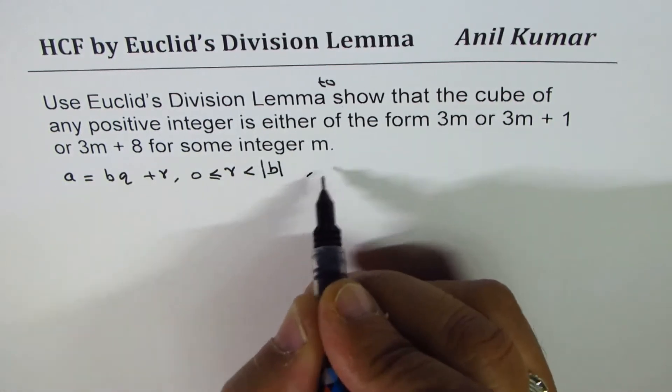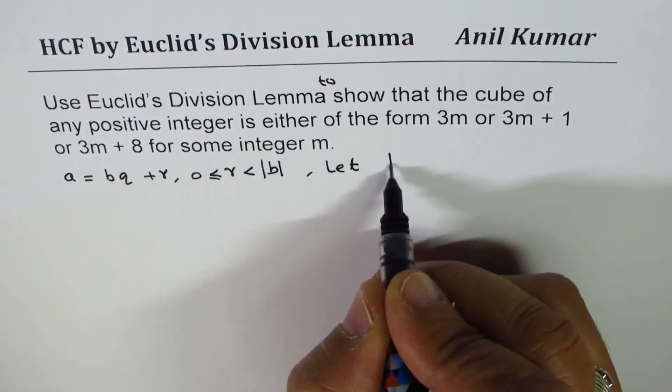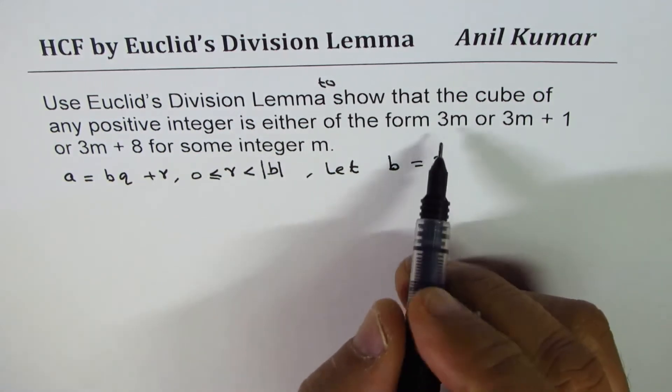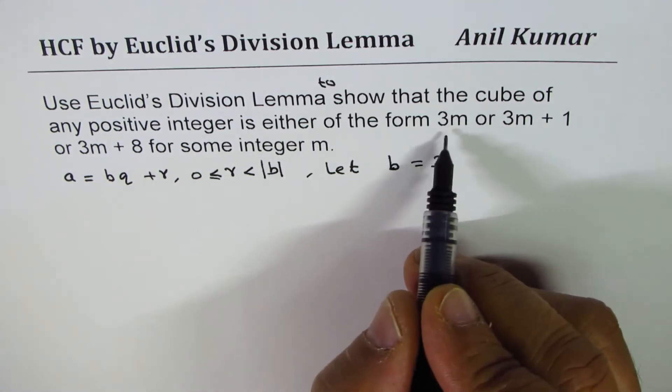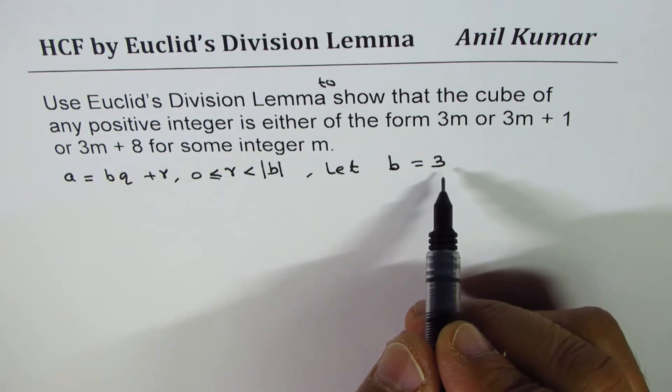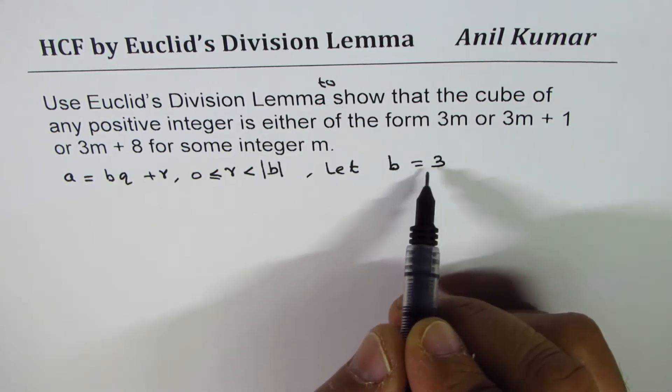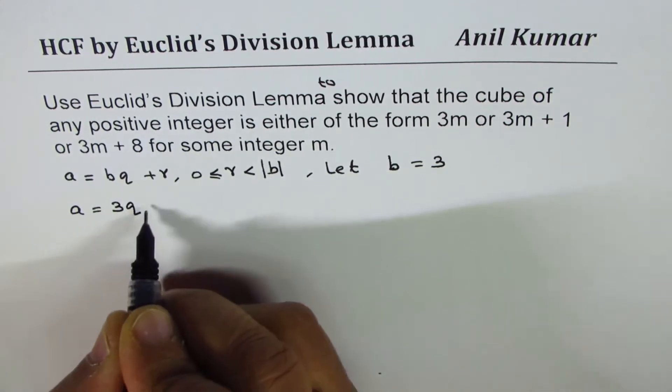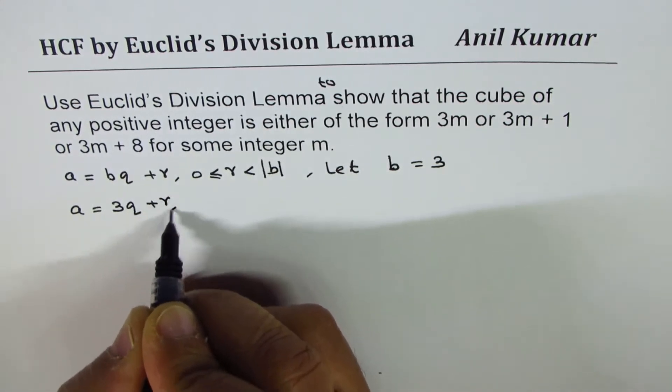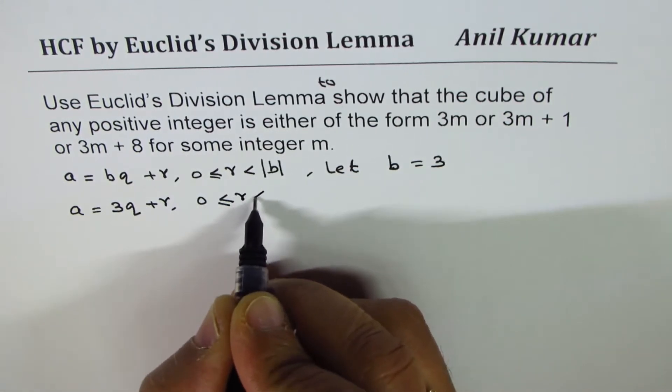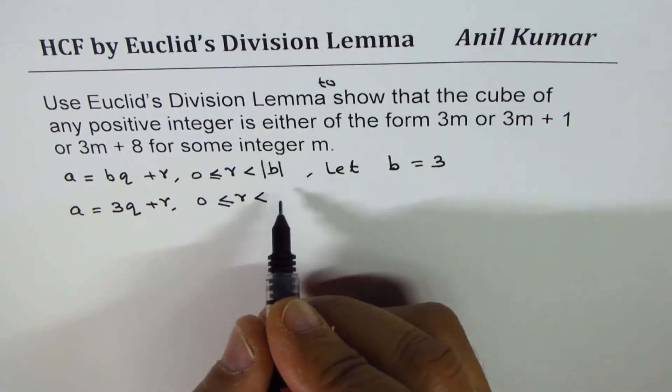Now, let B be equal to 3. Let's talk about this since we have something related to 3 in our equation. That gives us an idea of selecting B as 3. So if I use B as 3, I could write this as A equals 3Q plus R. And now R should be greater than or equal to 0 but less than this value, 3.